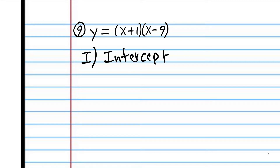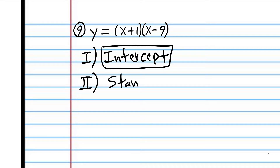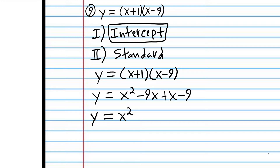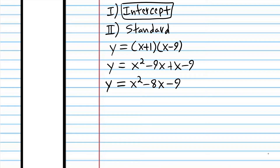Let's identify the form — it's in intercept form. We're going to convert to standard form. This problem will be easier because the coefficient of the product of binomials is just 1 — a equals 1. So all we have to do is use FOIL: x times x is x squared, x times negative 9 is negative 9x, 1 times x is x, and 1 times negative 9 is negative 9. Negative 9x plus x is negative 8x. We're now in standard form.